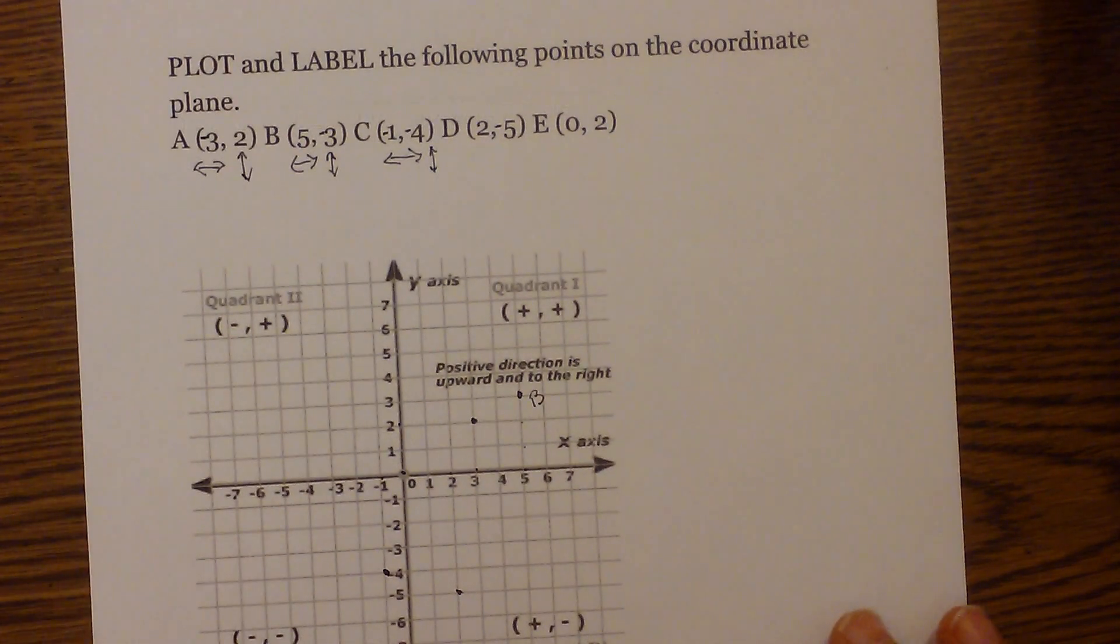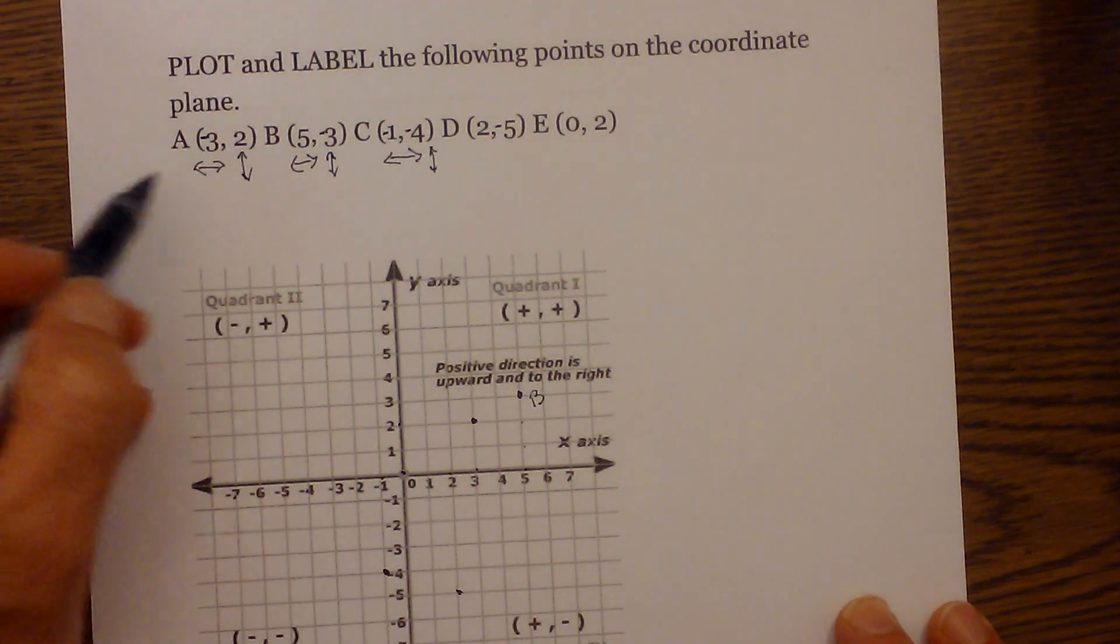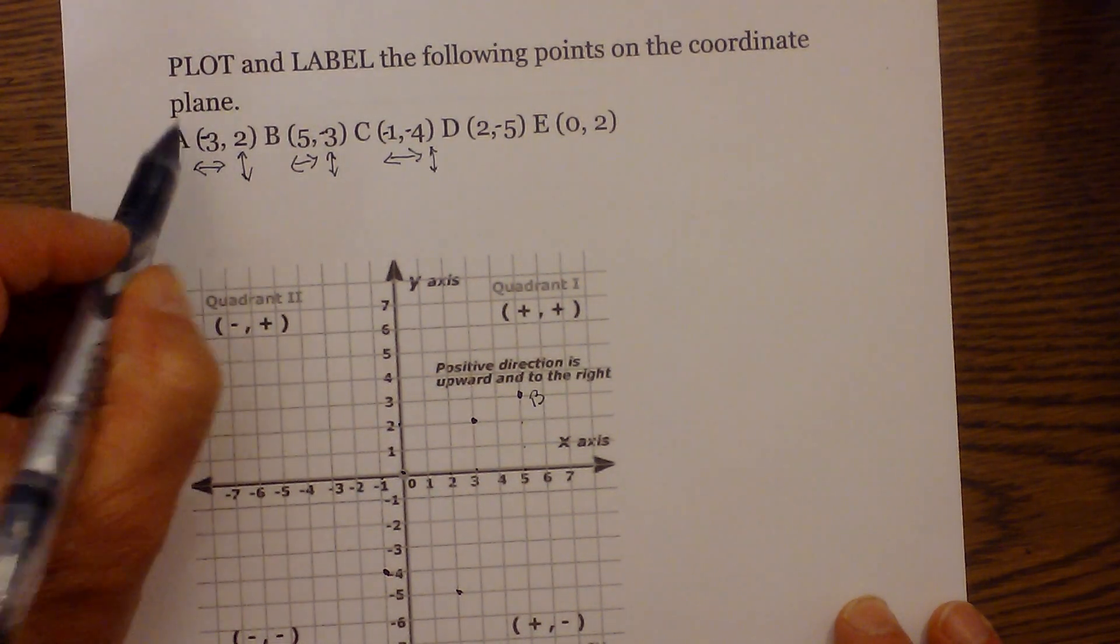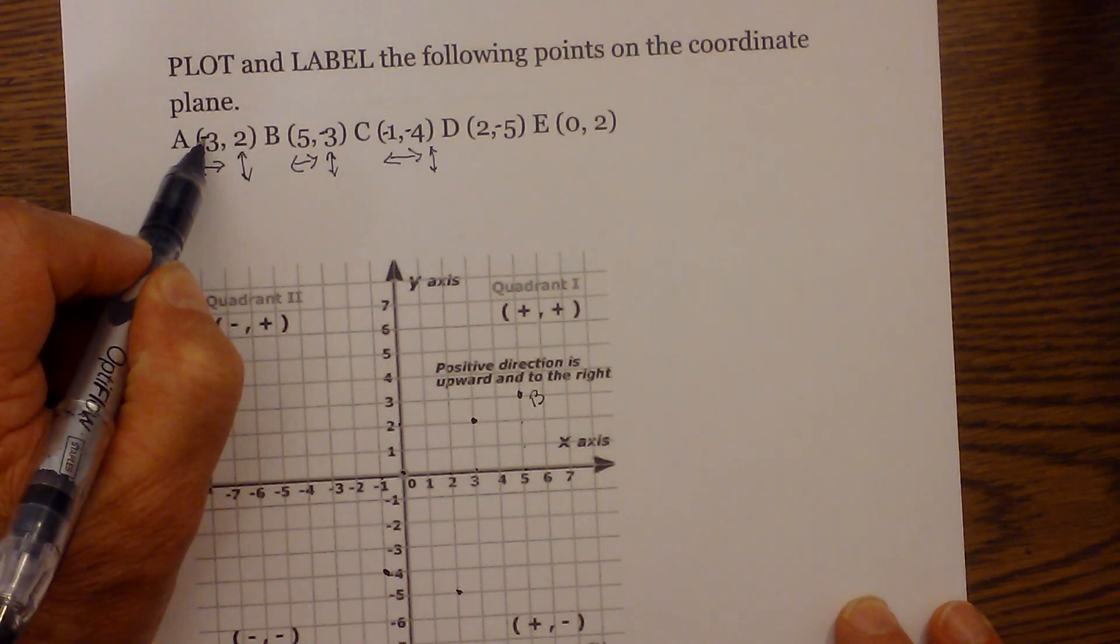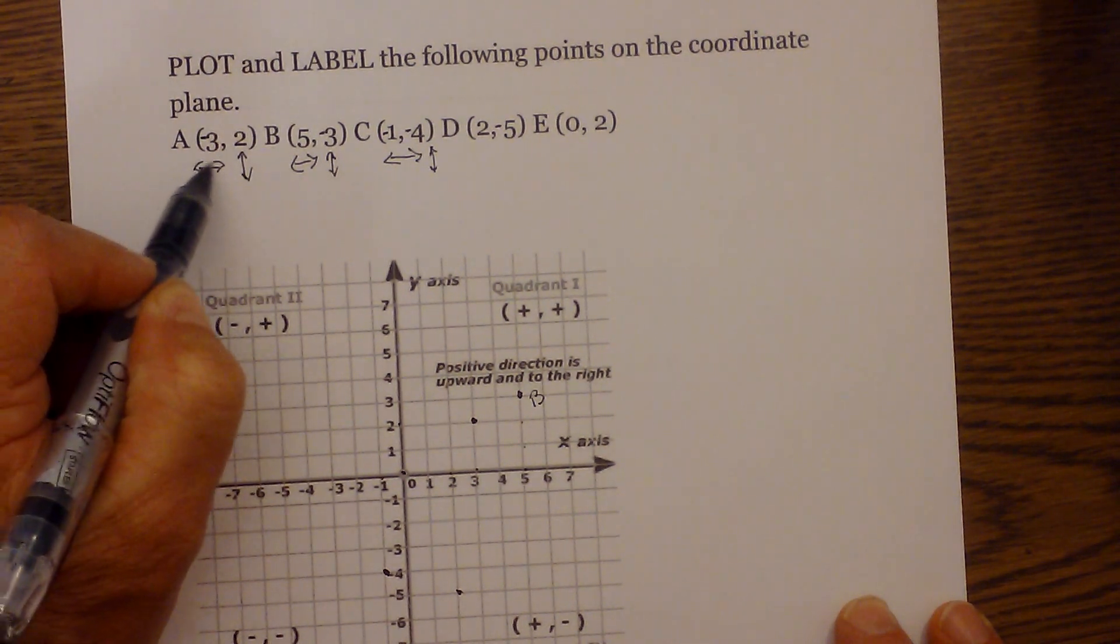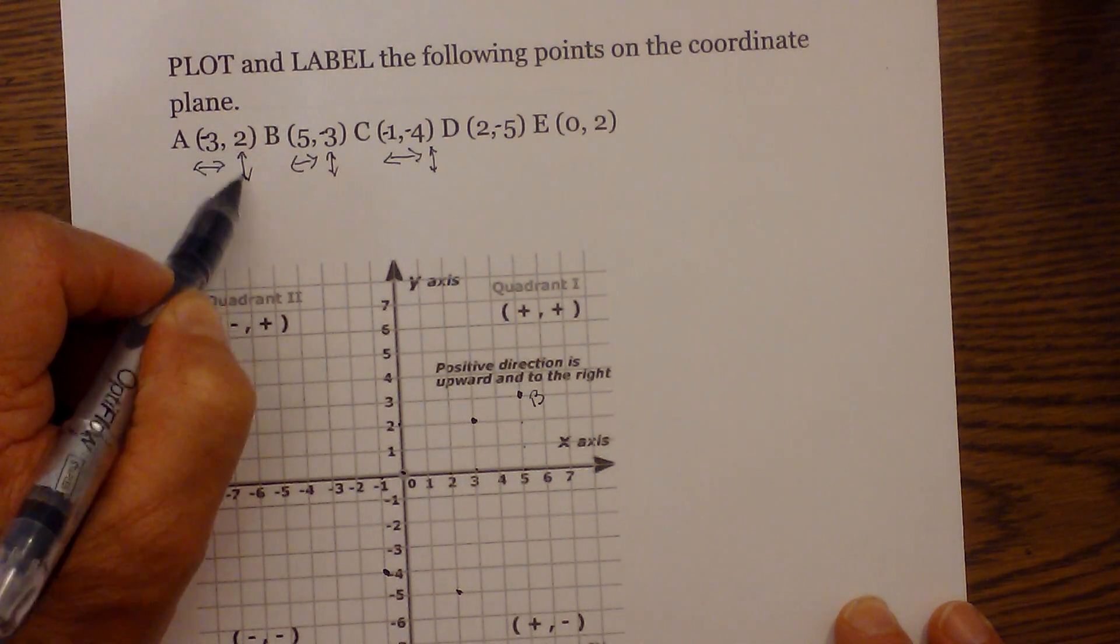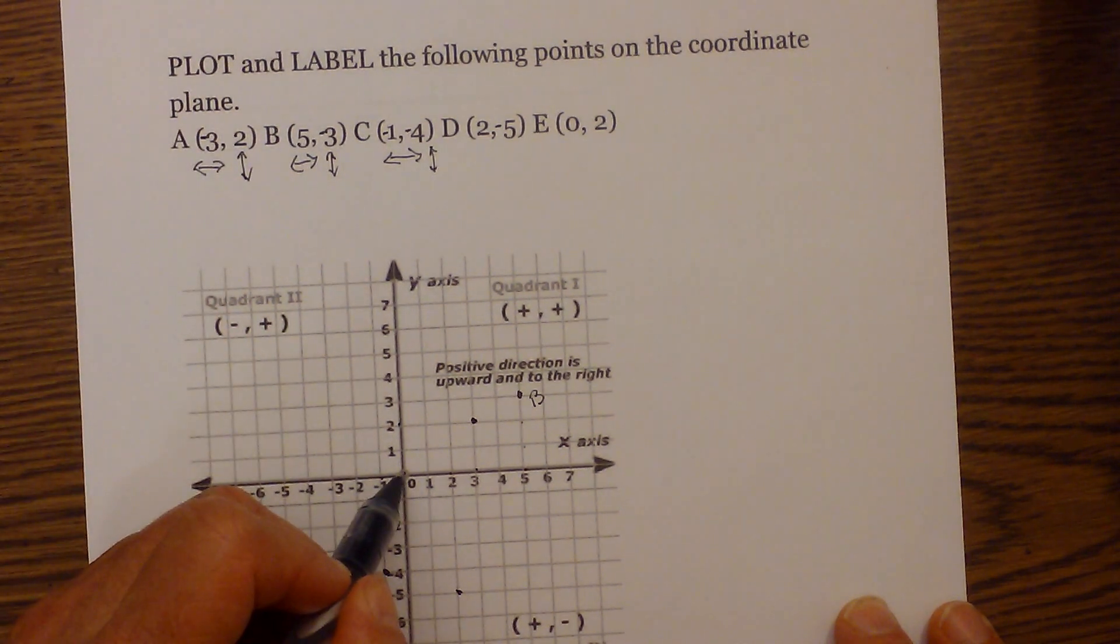Now let's go ahead and plot a couple numbers. Let's start with the first one. We have negative three and two. Remember, the first number is the x and it is always horizontal. The second number is y and it is vertical. Remember, we start at the origin.